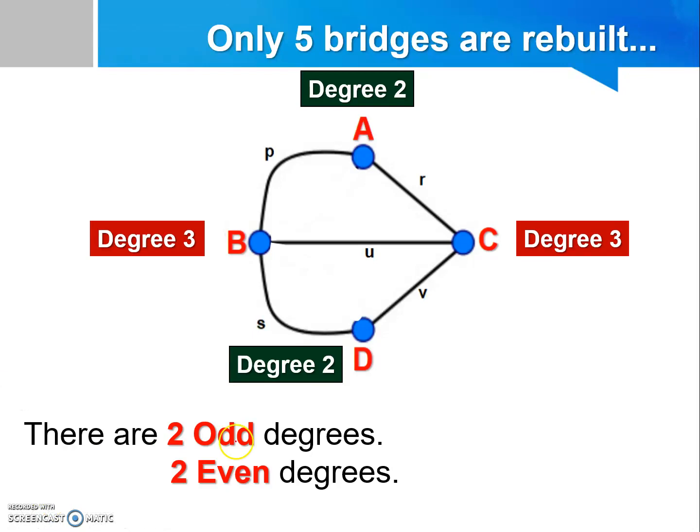Since there are 2 odd degrees, that is in vertex B and vertex C, we can either choose B or C to become our starting point. I would like to choose C as my starting point. First and foremost, I can draw from C to B, and then from B to A. Next, from A to D, then from D to C, then from C to B. That's right.